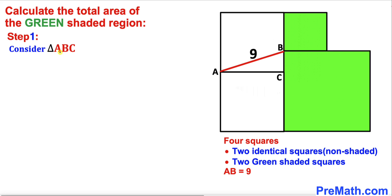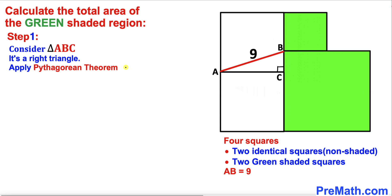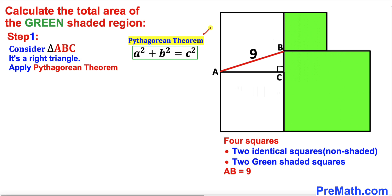Let's go ahead and get started. Here's our very first step: let's focus on triangle ABC as you can see over here. Since we are dealing with all these squares, this angle has got to be 90 degrees, so therefore this is a right triangle. Let's go ahead and apply the Pythagorean theorem: A squared plus B squared equals C squared.